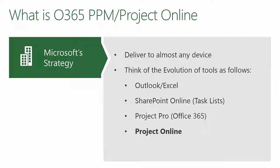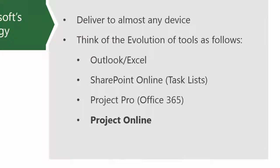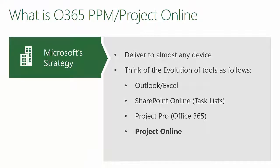Microsoft's strategy with Project Online is part of a series of stepping stones or maturity levels that each organization will go through. Most organizations are familiar with Outlook and Excel for capturing project information and communicating assignments and project status. As your organization grows in maturity, more sophisticated tools and options become available, such as Project Online. The movement from Outlook and Excel through SharePoint Online using task lists and then eventually incorporating Microsoft Project is a natural progression.